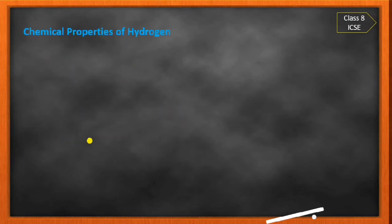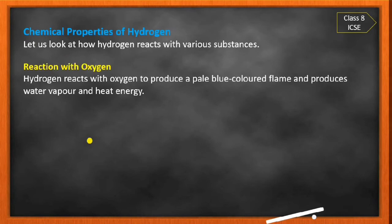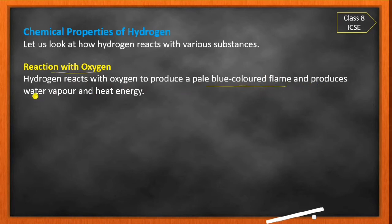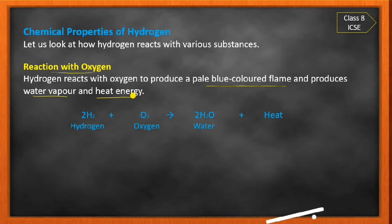Now we will discuss the chemical properties of hydrogen — how hydrogen reacts with various substances. The first reaction is with oxygen. Hydrogen reacts with oxygen to produce a pale blue colored flame, and it produces water vapors and heat energy.